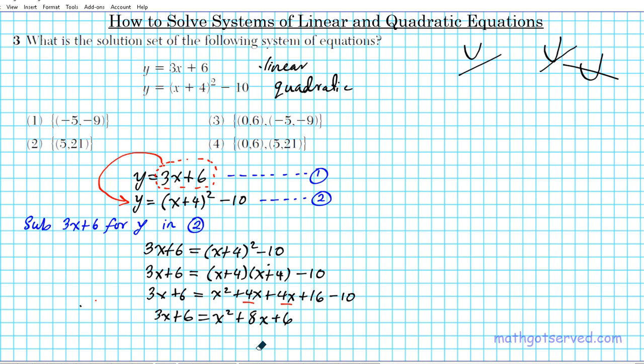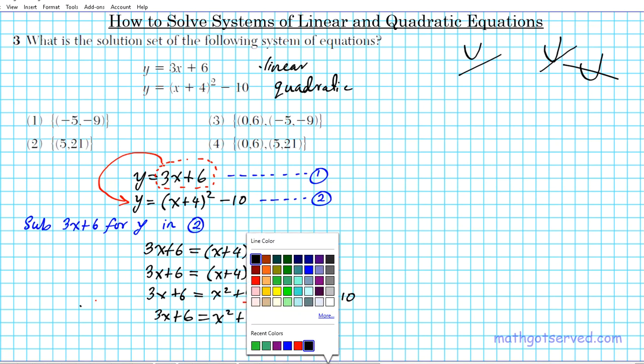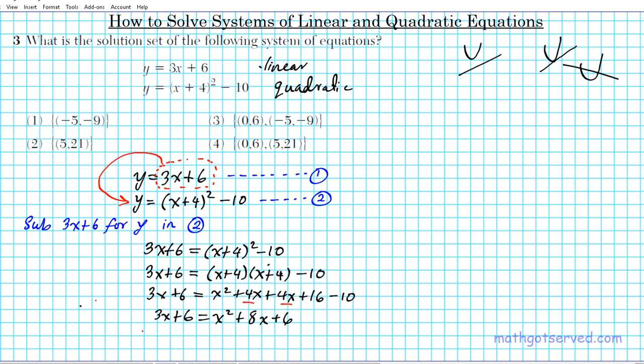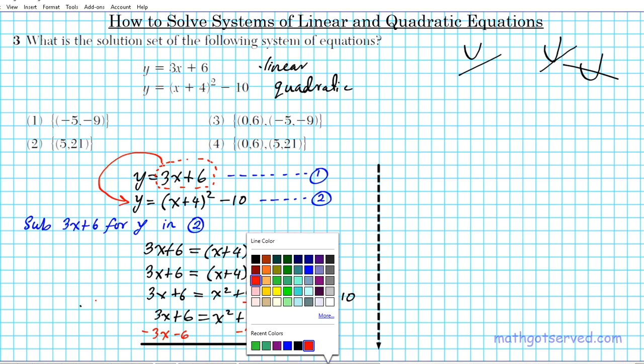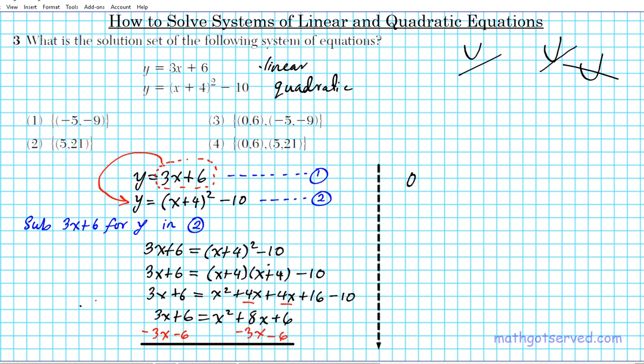So now what we're going to do to solve this quadratic is we're going to put it in standard form, set it equal to zero and use the zero product property. To do that, we'll simply subtract 3x and 6 from both sides of the equation so that it is equal to zero. I'm going to develop my workspace and continue working on the right side here. When I carry out that subtraction, I'm going to end up with 0 equals x square plus 5x, and then plus 6 minus 6 is 0.